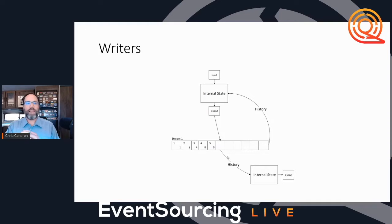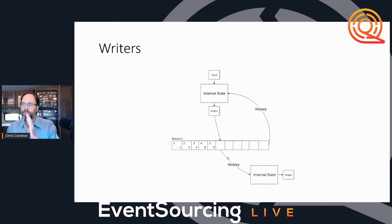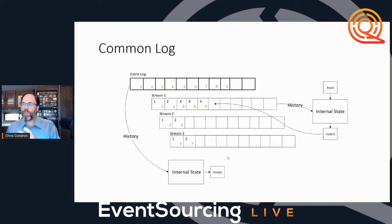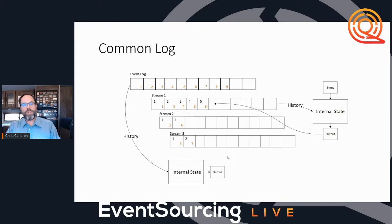That's why it's confusing how a process manager is different from an aggregate. One of the core things is that all of the writers we are using share a common log. That means any internal state I need — from a reader pulling out the history — I'm going to have situations where I have multiple writers all sharing that same common log.